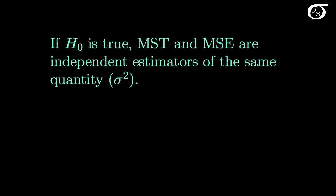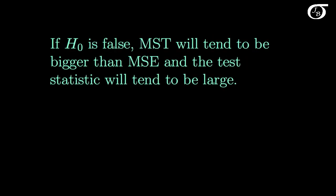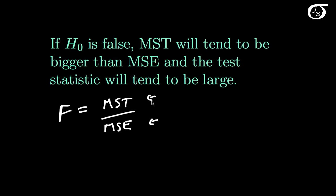It can be shown mathematically that if the null hypothesis is true, mean square treatment and mean square error are independent estimators of the same quantity — sigma squared, the true within-group variance. If the null hypothesis is false, mean square treatment will tend to be bigger than mean square error, and the test statistic will tend to be large. If the null hypothesis is true, these two things estimate the same quantity, and loosely speaking we're going to expect to get an F statistic somewhere in the neighborhood of 1. The F distribution has a mean and median that depends on the degrees of freedom, but loosely speaking the mean and the median are close to 1. But if the null hypothesis is false, mean square treatment will tend to be larger than mean square error, and the F statistic will tend to get large.